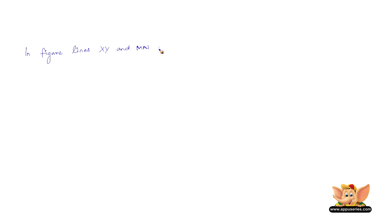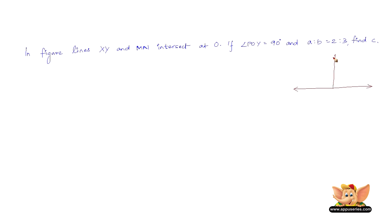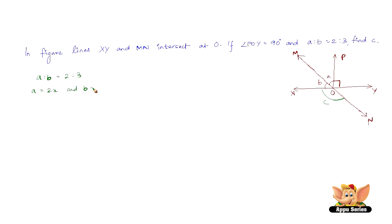Let us solve another problem. In the figure, lines XY and MN intersect at O. If angle POY equals 90 degrees and A is to B equals 2 to 3, we need to find C. Let A equal 2X and B equal 3X.